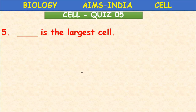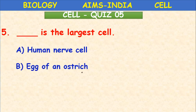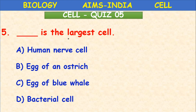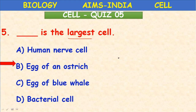Blank is the largest cell — human nerve cell, egg of an ostrich, egg of blue whale, or bacterial cell? You need to understand the term 'largest' as referring to size, which is different from 'longest.' The correct answer is the ostrich egg, which is a very large single living cell.